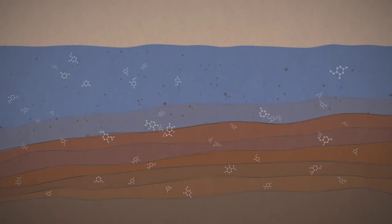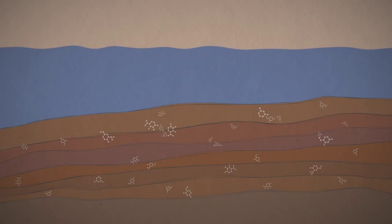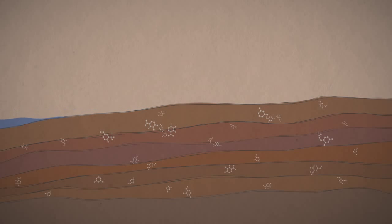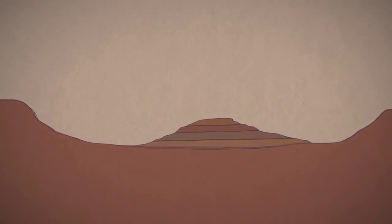Scientists think Curiosity's landing site, Gale Crater, contains those special layers, created in ancient times when water was present. The water dried up long ago, but rock layers that remain today could still preserve organics inside.